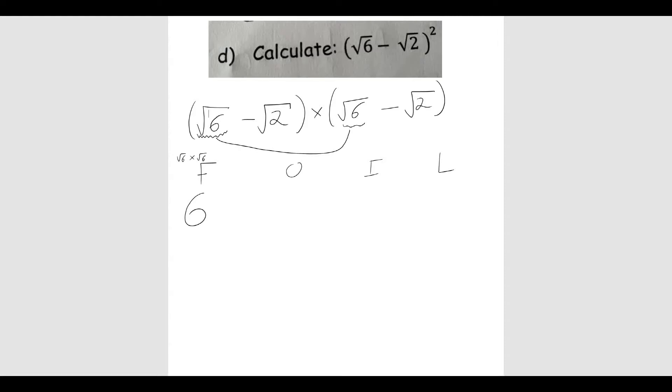Then I'm going to do the outside. So that means I times this first root 6, so the first term of the first bracket, by the second term in the second bracket. So I've got root 6 times minus root 2, which should be minus, because a plus times a minus is a minus, minus root 12. Because 6 times 2 is 12.